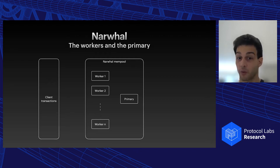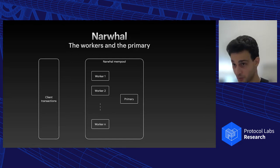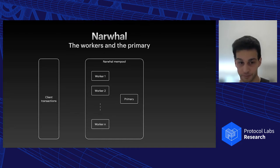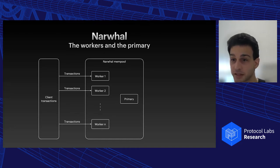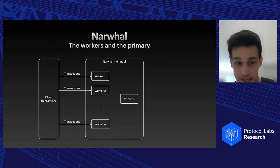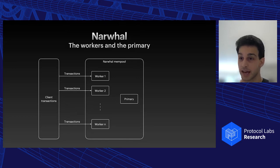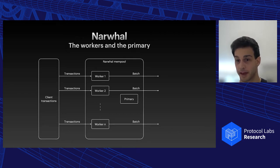A node operator can own multiple machines under its own authority, with one worker per machine if desired. This does not change the trust model of the Byzantine quorum at all. Clients submit transactions to workers through some kind of load balancing, each worker receiving different transactions. Each worker receives its transactions, adds them into batches, and broadcasts the batch to all other workers of all other nodes.